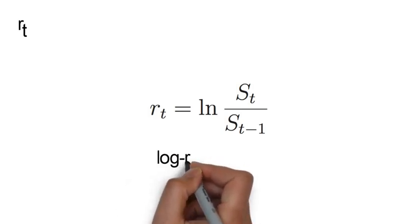For example, here RT, defined as the log of ST divided by ST-1, is the continuously compounded return, also called log return.